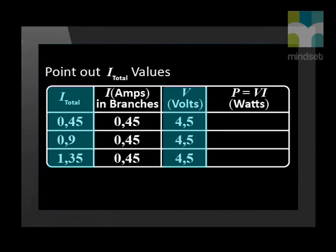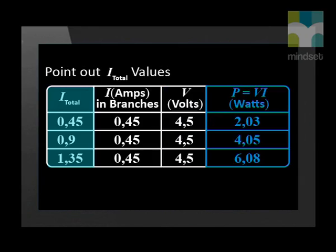Now let us look at the power being dissipated across the whole circuit as more light bulbs are added in parallel. To do this, we use the total current in the main circuit and multiply it by the potential difference across the circuit. What do you notice about the power that is lost? As we add more light bulbs in parallel, although the power in each branch remains the same, the total power dissipated across the circuit increases.